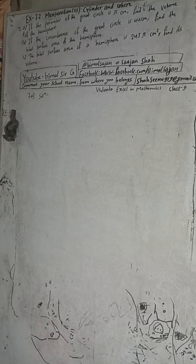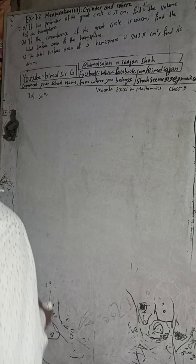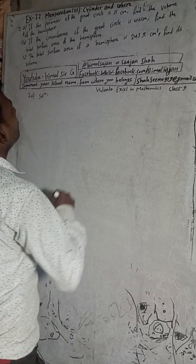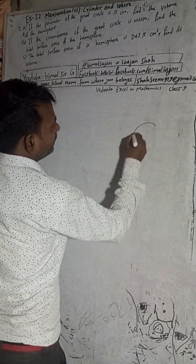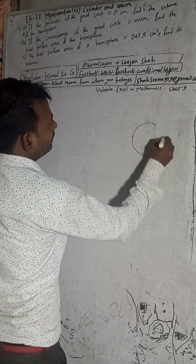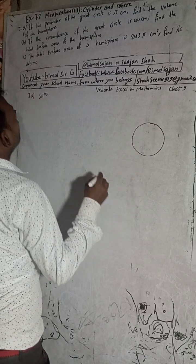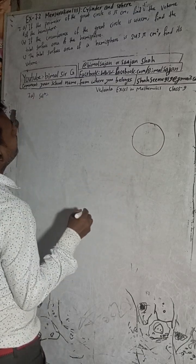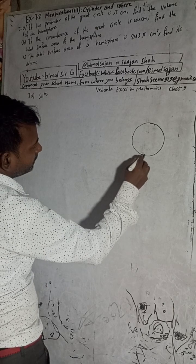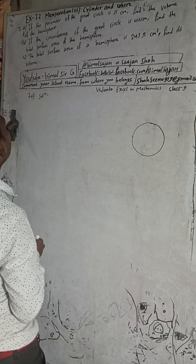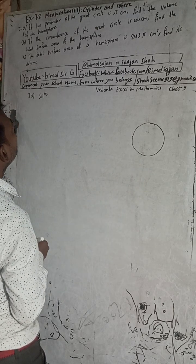The question is: if the perimeter of the great circle is pi, find the volume of the hemisphere. So, the perimeter of the great circle is given as pi.